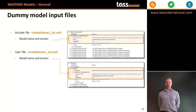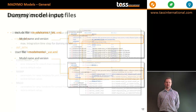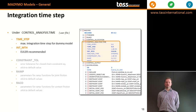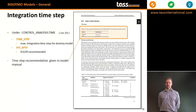Both files have the model name and version number provided in the product information element. The user file shows the control analysis time element in which the maximum integration time step for the dummy model is given. The Euler integration method is recommended, and the time step recommendation follows that given in the model manual.